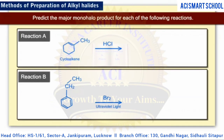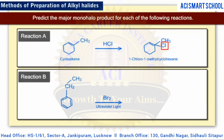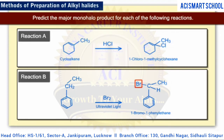Test your knowledge: predict the major monohalo product for two reactions. Note that the reactant in reaction A is a cycloalkane, while the reactant in reaction B contains an aromatic ring. Reaction A is an addition reaction; based on Markovnikov's rule, the chlorine atom will attach at the same carbon to which the methyl group is attached. Reaction B is a free radical halogenation reaction; a bromine atom replaces a secondary hydrogen atom in the alkyl substituent attached to the aryl ring. The hydrogens on the benzene ring will not be replaced under these conditions.